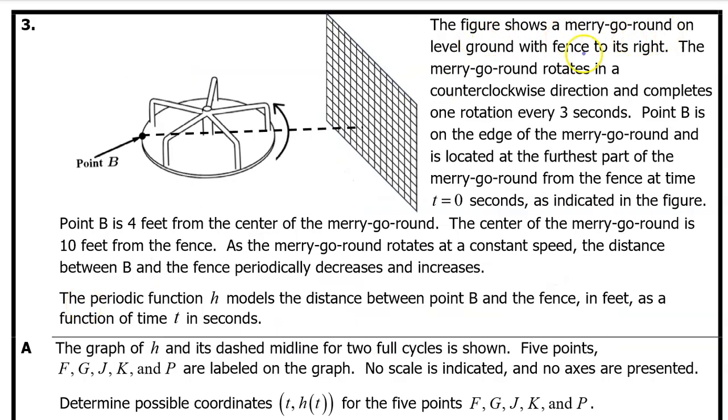The figure shows a merry-go-round on level ground with fence to its right. The merry-go-round rotates in a counter-clockwise direction and completes one rotation every three seconds. Point B is on the edge of the merry-go-round and is located at the furthest part of the merry-go-round from the fence at time t equals zero seconds, as indicated in the figure. Point B is four feet from the center of the merry-go-round. The center of the merry-go-round is ten feet from the fence. As the merry-go-round rotates at a constant speed, the distance between B and the fence periodically decreases and increases. The periodic function H models the distance between point B and the fence in feet as a function of time in seconds.